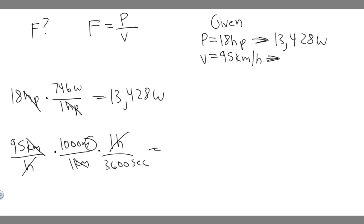This will give us meters per second. Take 95 multiplied by 1,000 and then divide by 3,600, and you get 26.38 meters per second.